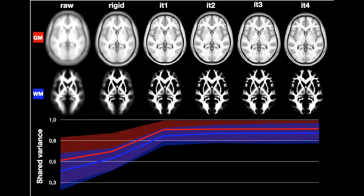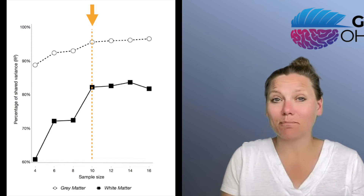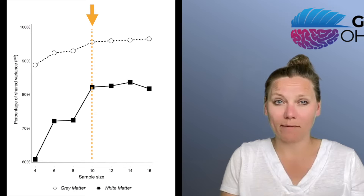How do we get these images? To compare how different we are, we first created a template representing the group average for gray and white matter, then compared how far every individual is from this average. Through various iterations, the best percentage of shared variants we can reach is somewhere between 80% and 100%. We also found that it takes about 10 people to build a reliable template for gray and white matter maps — adding more people does not considerably improve the percentage of shared variants.